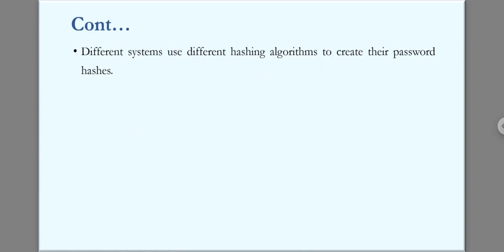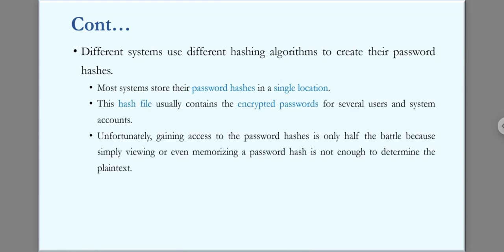Most systems store their password hashes in a single location. This hash file usually contains the encrypted passwords for several users and system accounts. Unfortunately, gaining access to the password hashes is only half the battle, because simply viewing or memorizing a password hash is not enough to determine the plain text. Technically, it is not supposed to be possible to work backward from a hash to plain text — by definition, a hash, once encrypted, is never meant to be decrypted again.